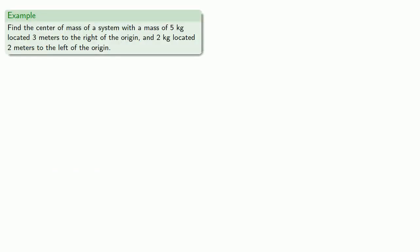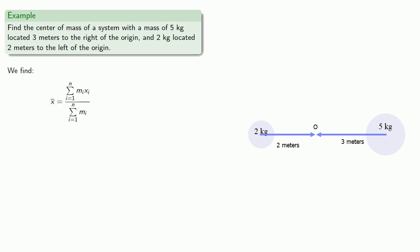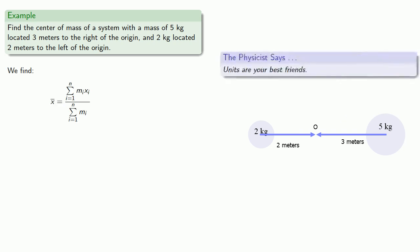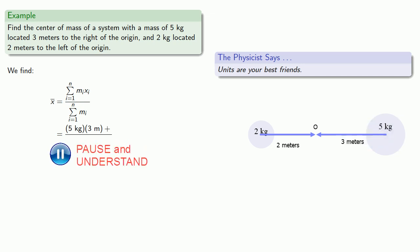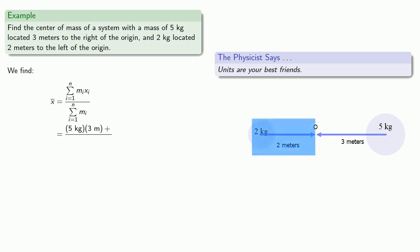For example, suppose we want to find the center of mass of a system with a mass of 5 kilograms located 3 meters to the right of the origin, and a 2-kilogram mass located 2 meters to the left of the origin. We have our formula for center of mass, and a useful reminder from physics: units are your best friends. It's very important to keep track of units. So, a 5-kilogram mass at 3 meters to the right is 5 kg × 3 m, and a 2-kilogram mass 2 meters to the left gives 2 kg × (−2 m).